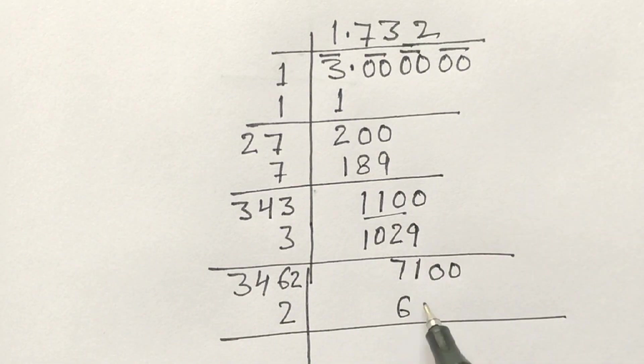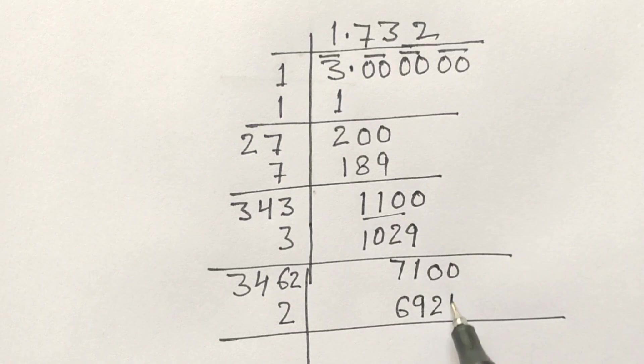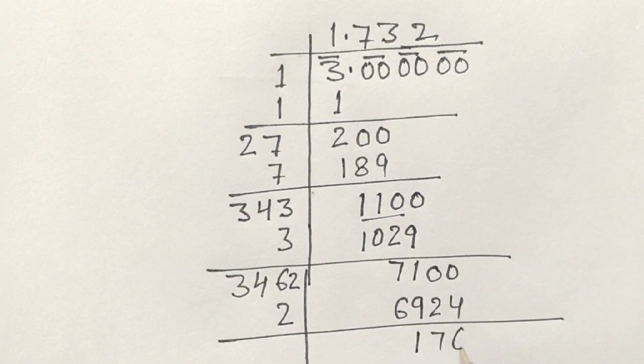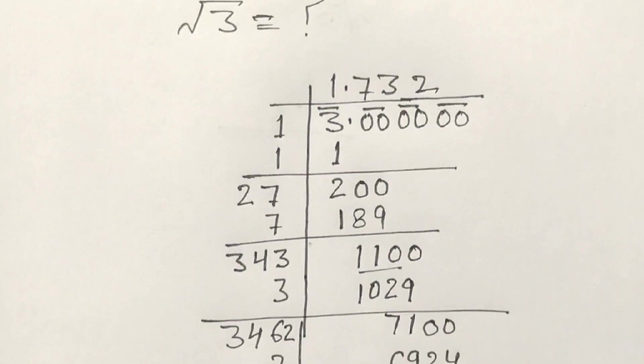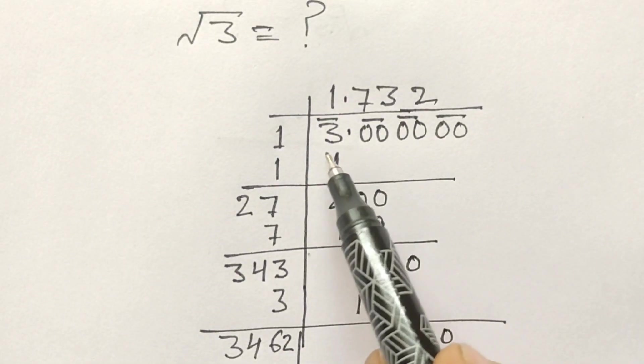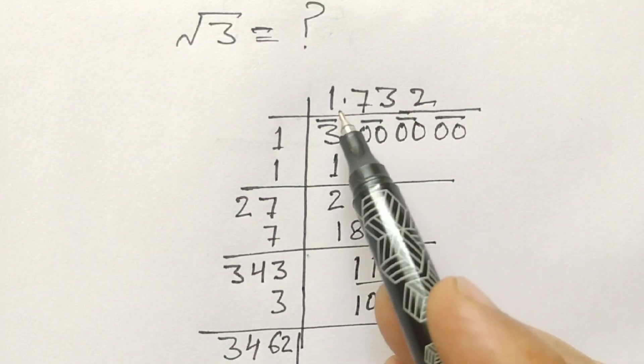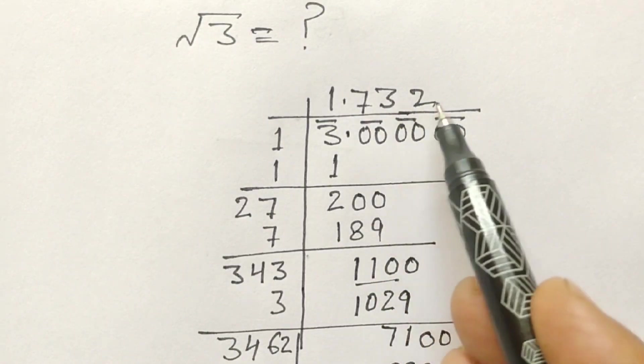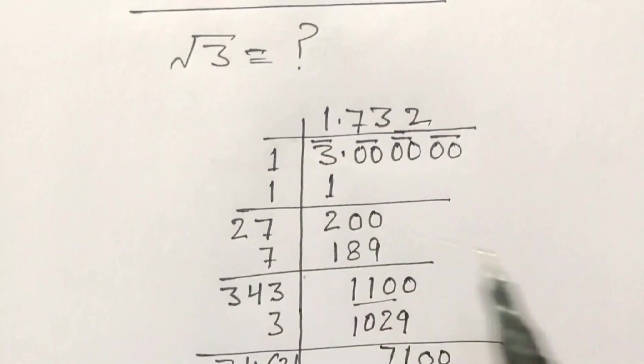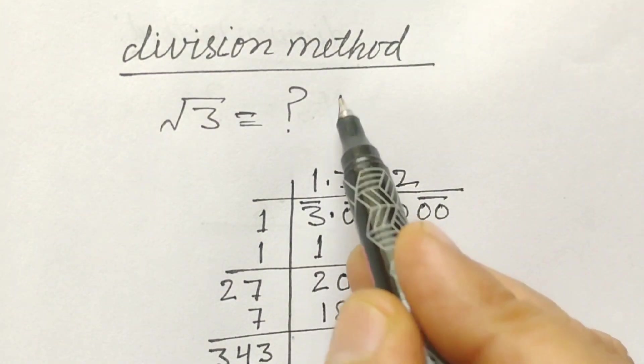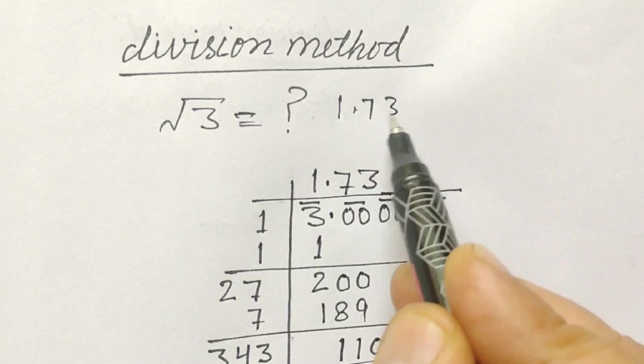3462, if we multiply by 2, we get 6924. Now we have 1.732. So square root of 3 in 3 decimal places is 1.732.